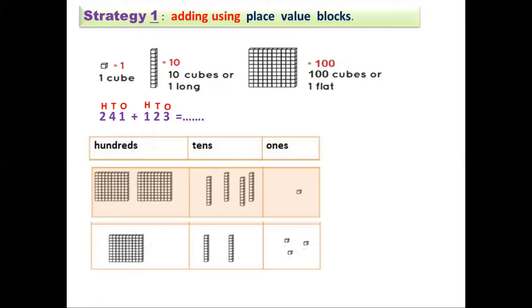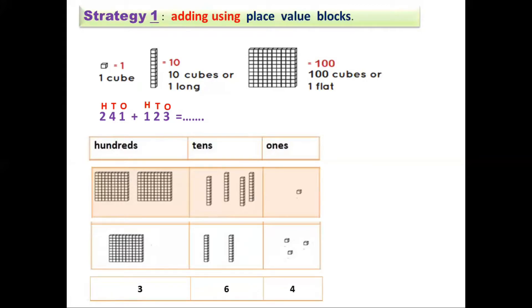Finally, to get the sum, we count the blocks in each place. In the ones place we count: one, two, three, four — we have four ones. Wait, counting all ones gives us six. In the tens place we count and get six tens. In the hundreds place we count and get three hundreds. So the sum of 241 and 123 is 364.